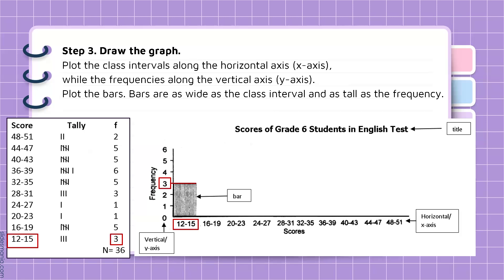So bars are as wide as the class interval and as tall as the frequency. Considering the lowest class interval, which is 12 to 15, with 3 scores. So we have here, the height of the bar is 3, because there are 3 scores within the class interval 12 to 15.